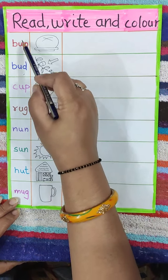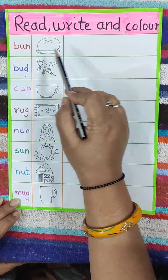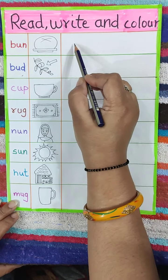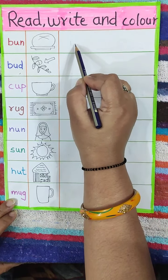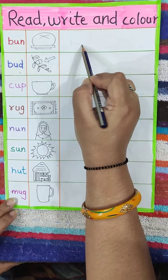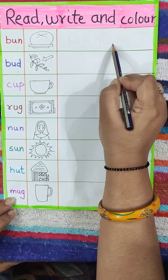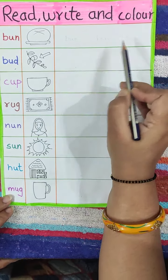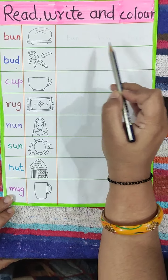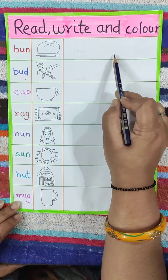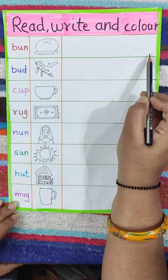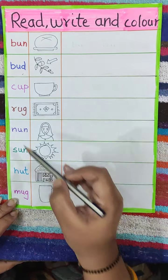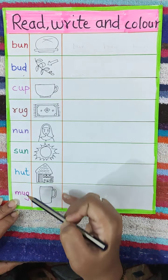These words you have to write here. For example, B, U, N — bun. You will write B, U, N — bun, three times. While writing, you have to speak loudly. You have to say the words loudly. Understand? Like this, you have to do all these words.